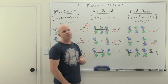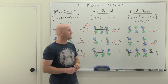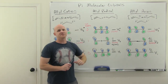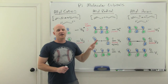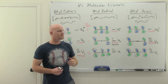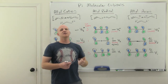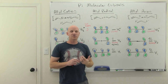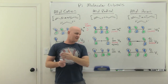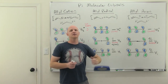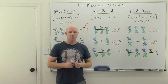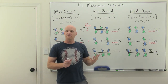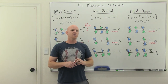The same holds true for the radical. So that's the allyl system. In the next lesson, we'll look at 1,3,5-hexatriene, which has six atoms involved in overlapping p orbitals and six molecular orbitals — the most complex one we'll look at.